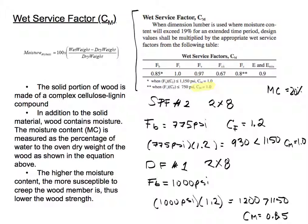Using the NDS supplement and finding the bending values, you will find that for the SPF number two the bending stress is 775 psi. For Douglas fir number one, the bending stress is 1,000 psi.